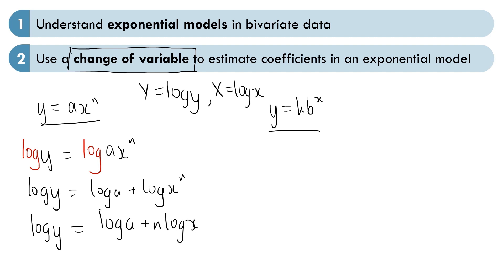Now we can notice that if we swap log y and log x for capital Y and capital X, we have capital Y equals log a plus n times X. This is now linear, with y-intercept log a and gradient n.